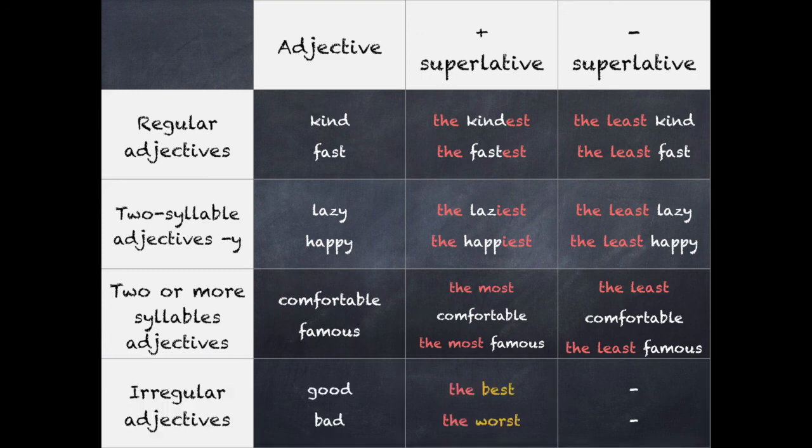Then we have some irregular adjectives, like 'good' or 'bad', that we will have to study. 'Good' will be 'the best', and for 'bad' it will be 'the worst'.